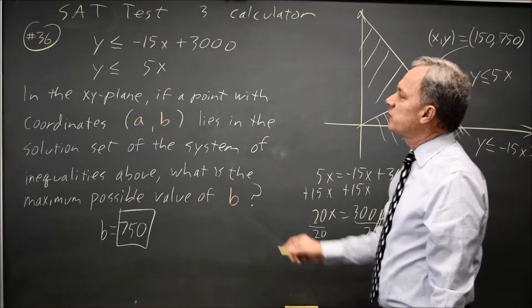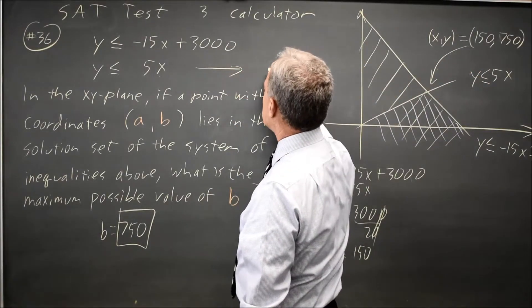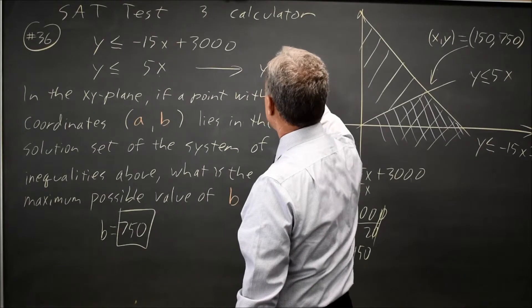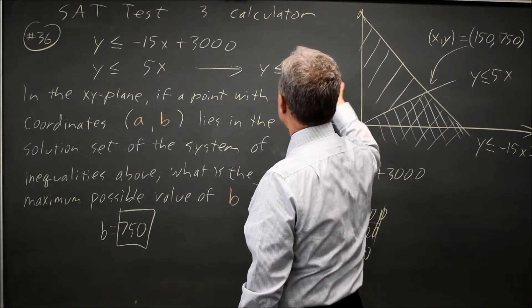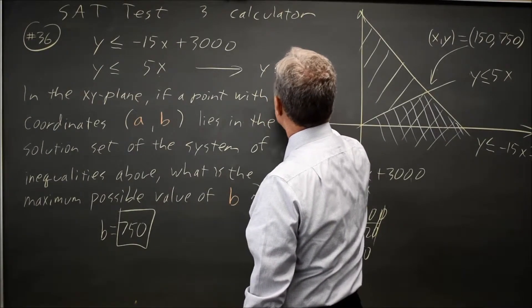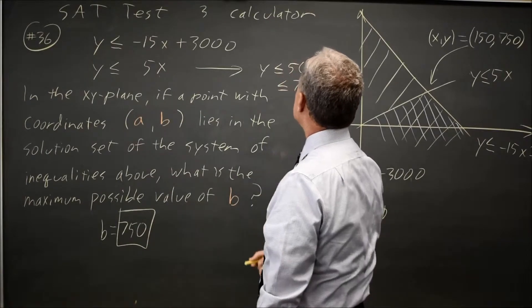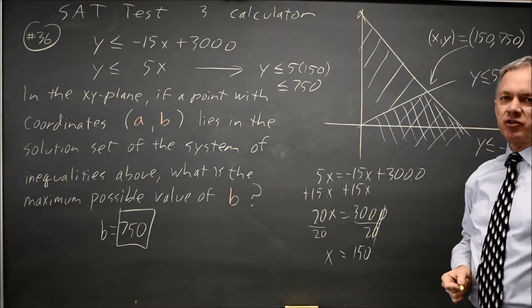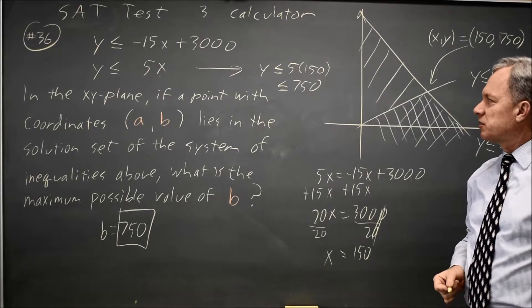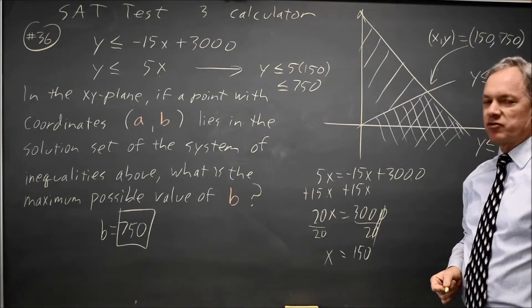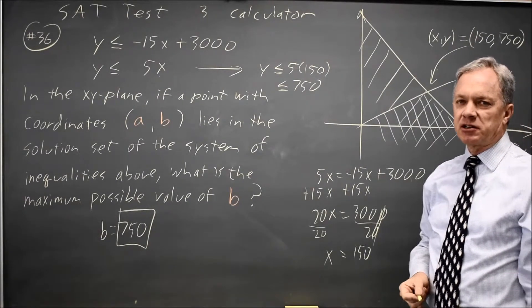If x is 150, I can substitute that in here to get y less than or equal to 5 times 150, or y less than or equal to 750. Since the maximum occurs at x equals 150, the y-values will be less than or equal to 5 times that, less than or equal to 750, which is the answer I got on the calculator.